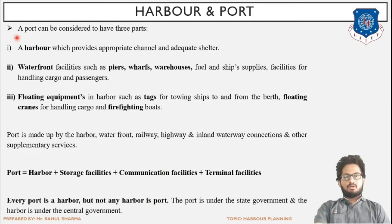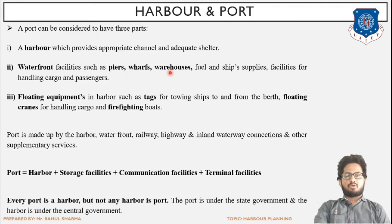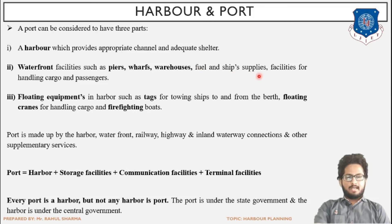A port can be considered to have three parts. First is the harbor itself, which provides adequate channel space for movement and adequate shelter for carrying out loading and unloading of cargo. Second are the waterfront facilities — facilities existing adjacent to or on the water, such as piers and wharves — the platforms provided for loading and unloading of cargo — and also warehouse for long-term storage, fuel for filling operations, and ship supplies for maintenance or repair work.